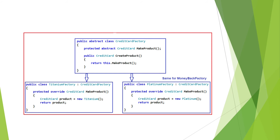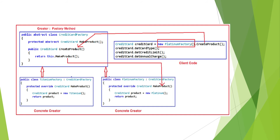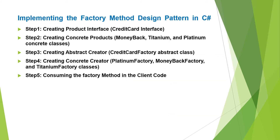Now let us see how the client consumes the credit card factory class to create an object. Suppose the client wants to create an object of the Platinum class — then the client needs to call the createProduct method on the Platinum factory instance. That createProduct method will return a concrete Platinum object stored in a Credit Card reference variable. Similarly, if the client wants to create a MoneyBack object, the client calls the createProduct method on the MoneyBack factory instance.